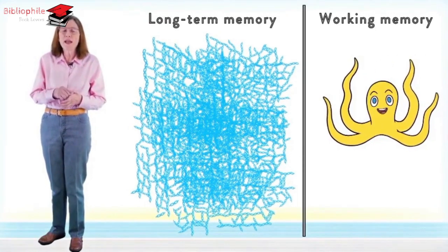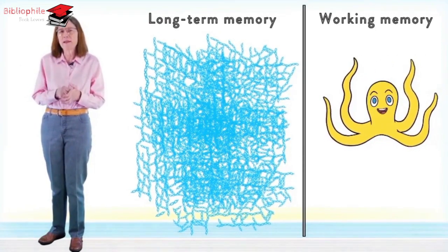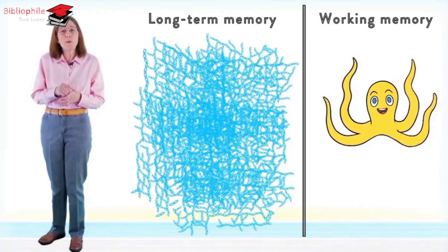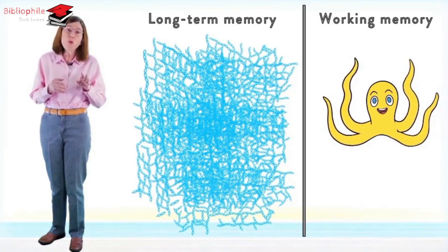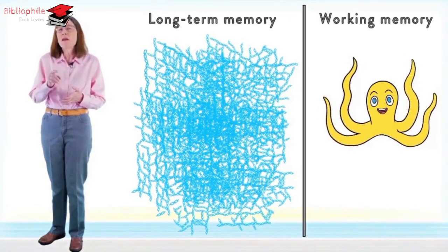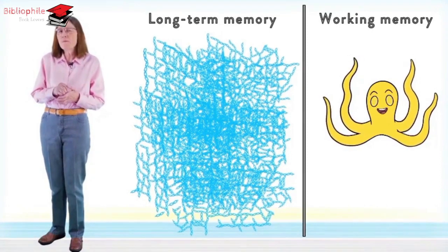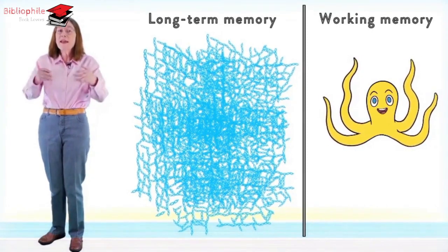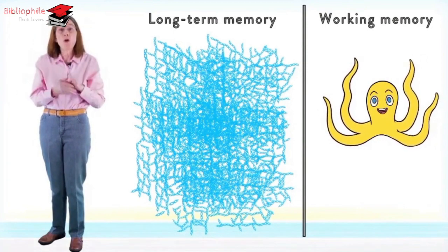Working memory, on the other hand, has a very limited capacity. An average working memory can hold only around four thoughts or concepts. This means you can think of your mental octopus as having only about four arms.